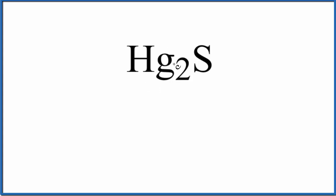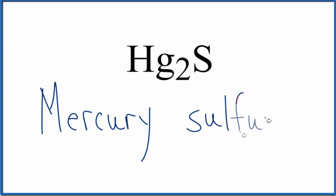So first let's write the name for Hg as it appears on the periodic table, that's mercury. Next we'll write the name for the sulfur, that's sulfur, and then we replace the UR with IDE, since we have an ionic compound.